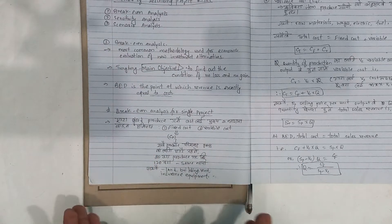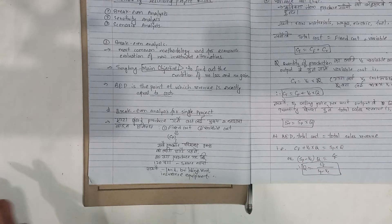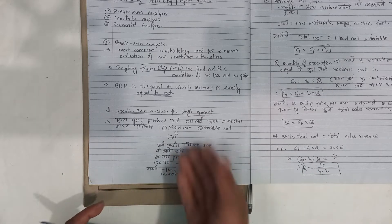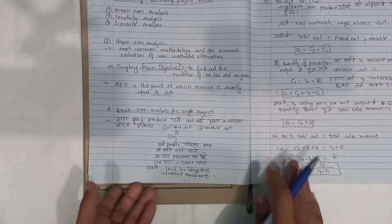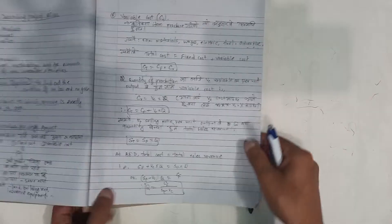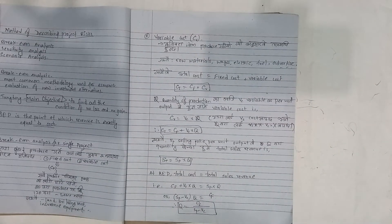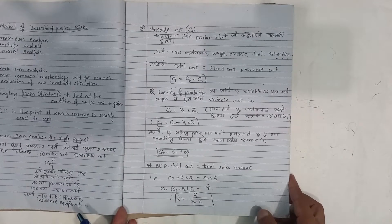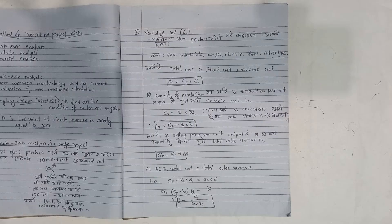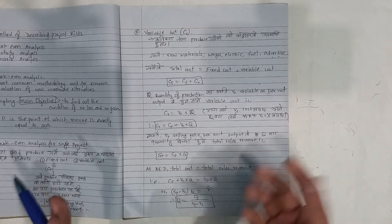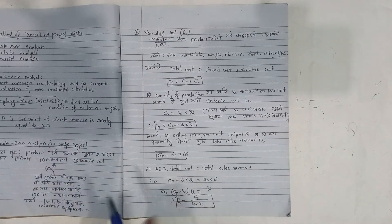When cost for goods is considered, we look at fixed cost and variable cost. Fixed cost does not change with the quantity produced — for example, land, building, rent, insurance, and equipment. Variable cost depends on how many items are produced, such as electricity cost. Variable costs include raw materials, electricity, fuel, and advertising.